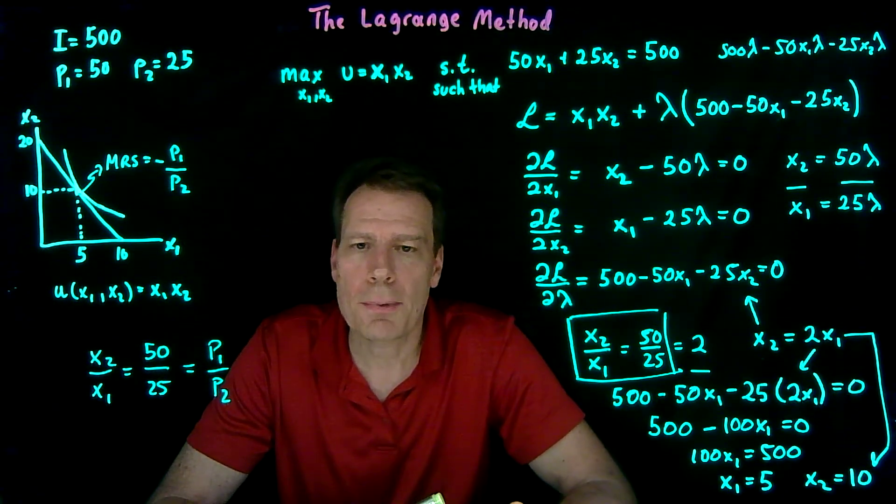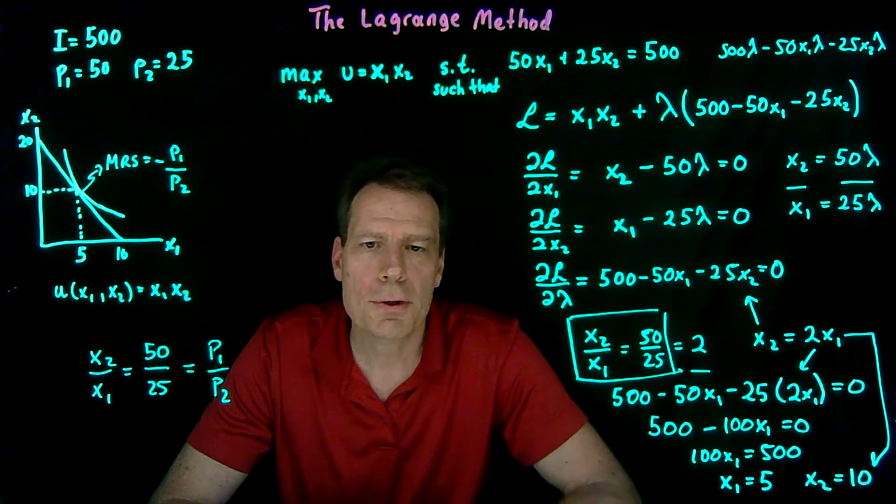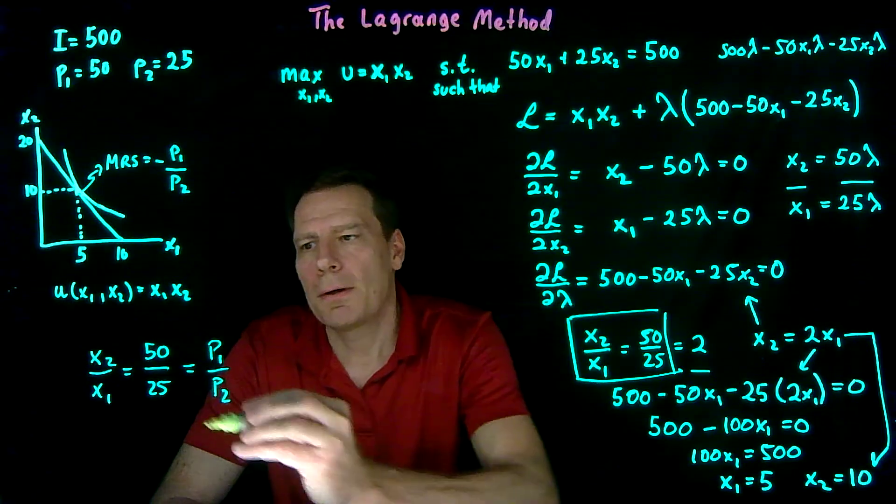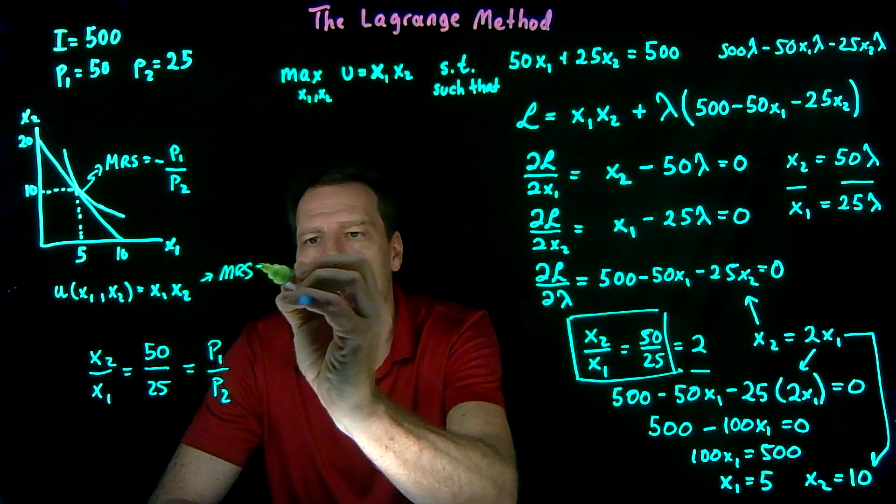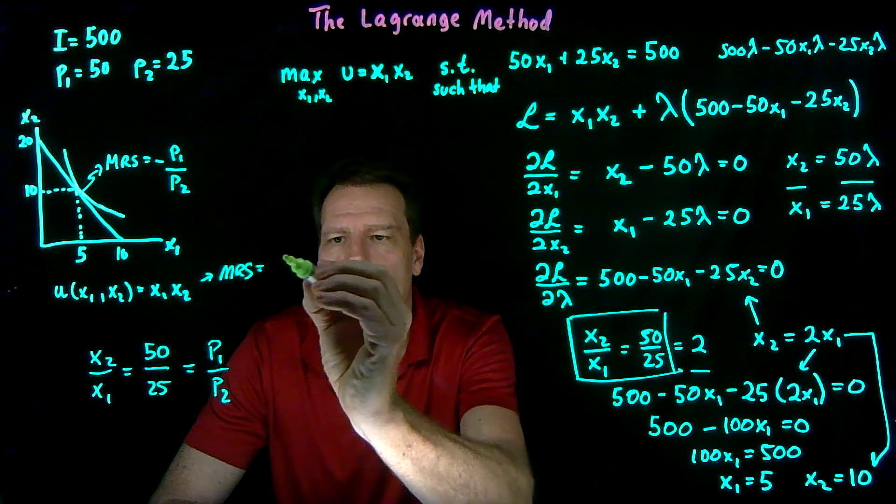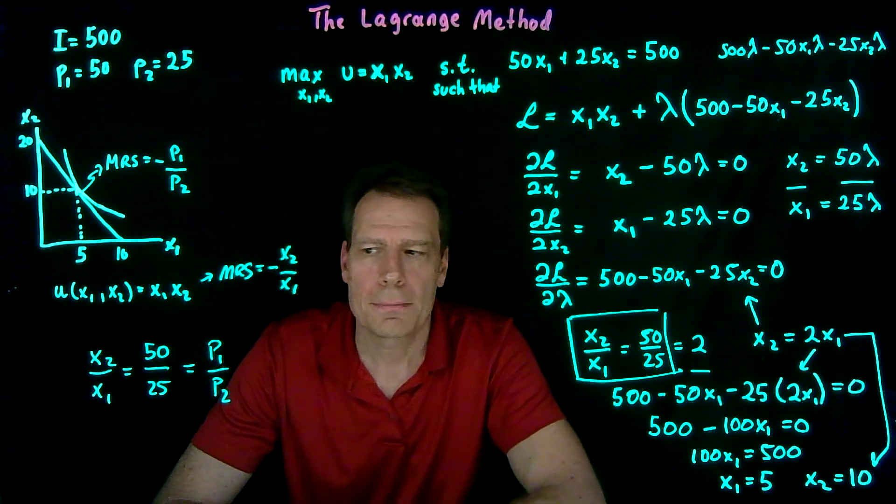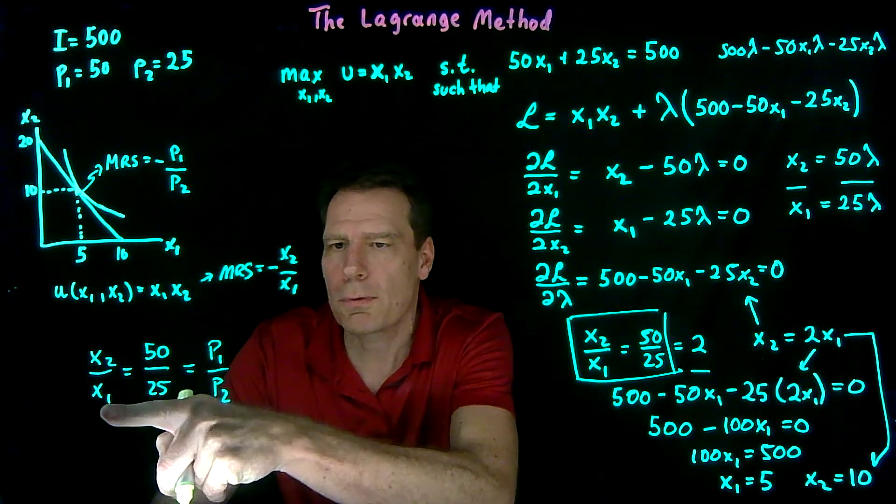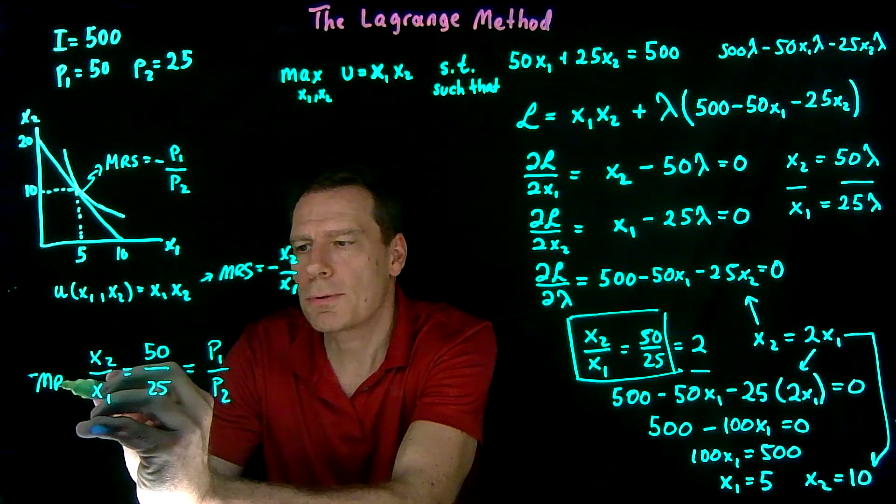And when we first derived the marginal rate of substitution mathematically, we used this function and calculated that the marginal rate of substitution for this function was equal to minus x2 over x1. So what we have here is x2 over x1, which is minus the marginal rate of substitution.